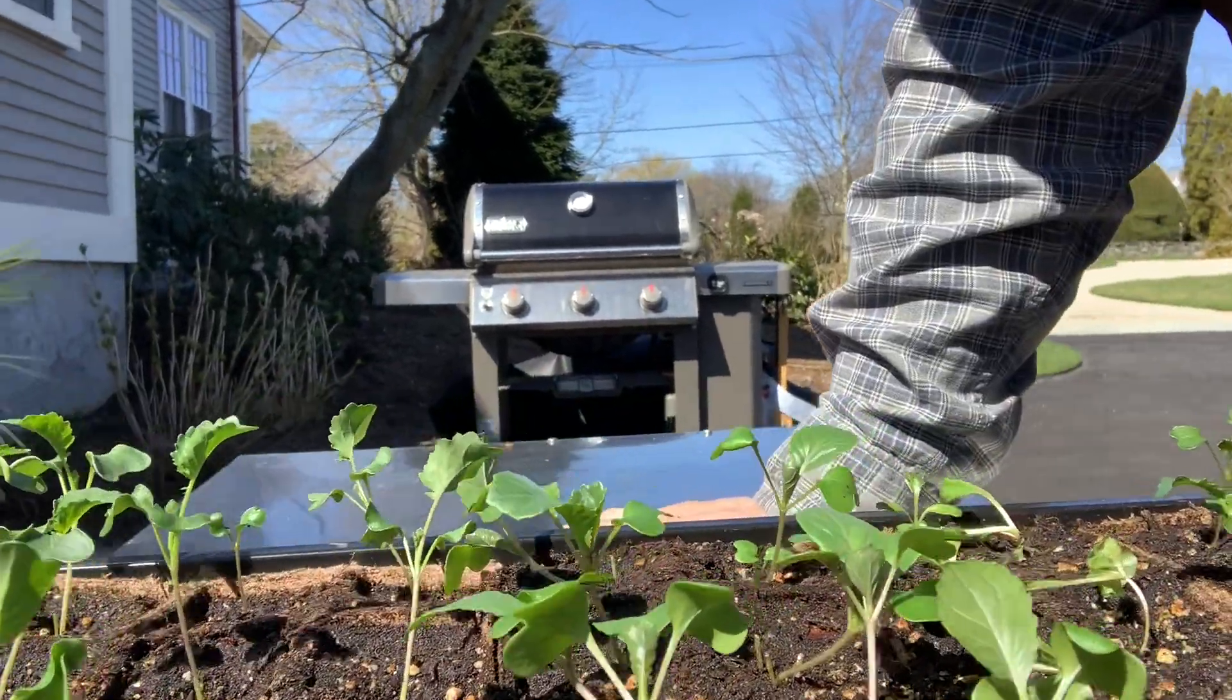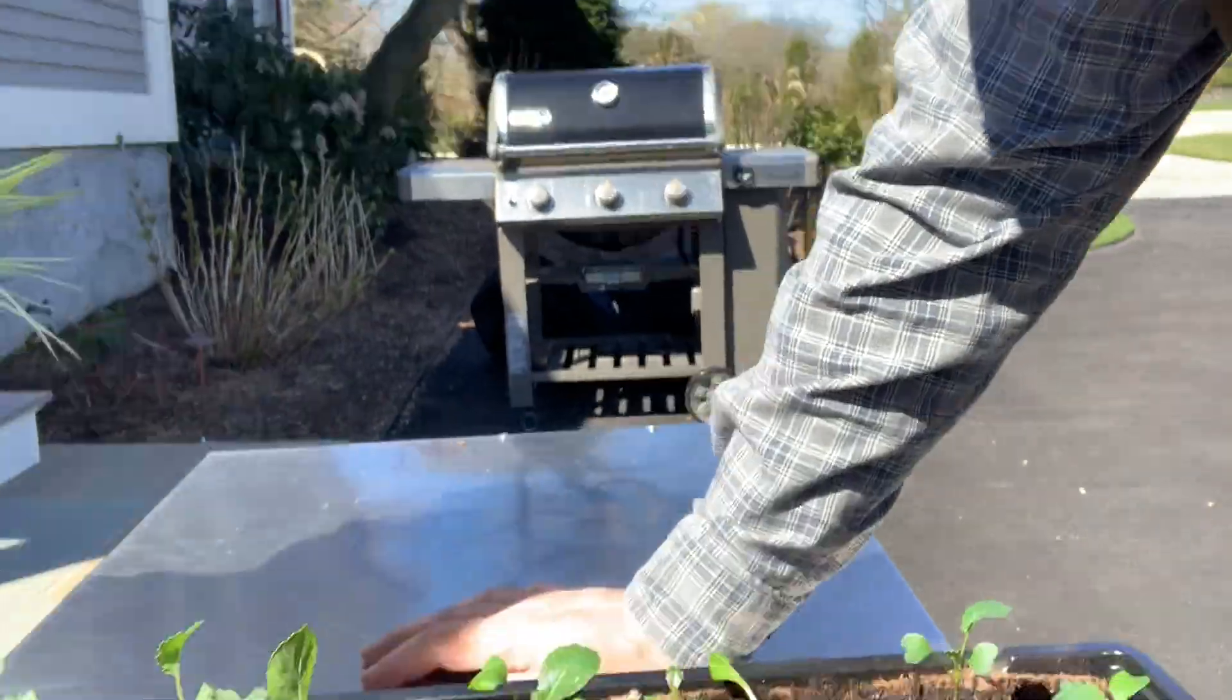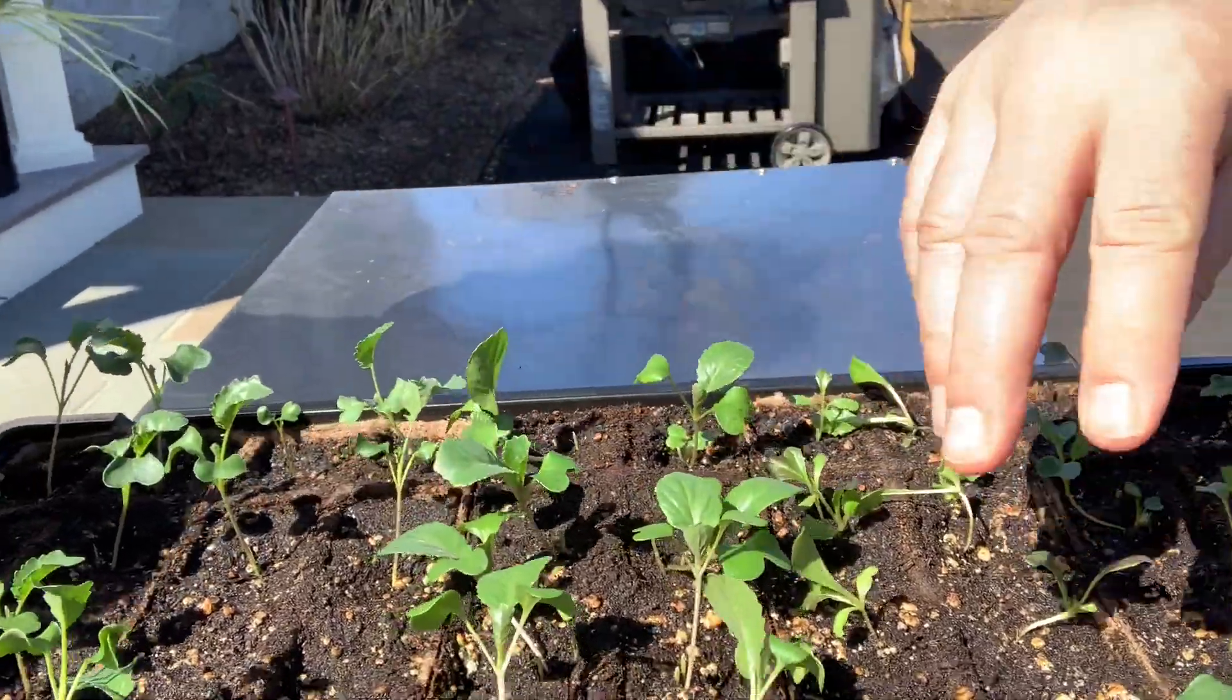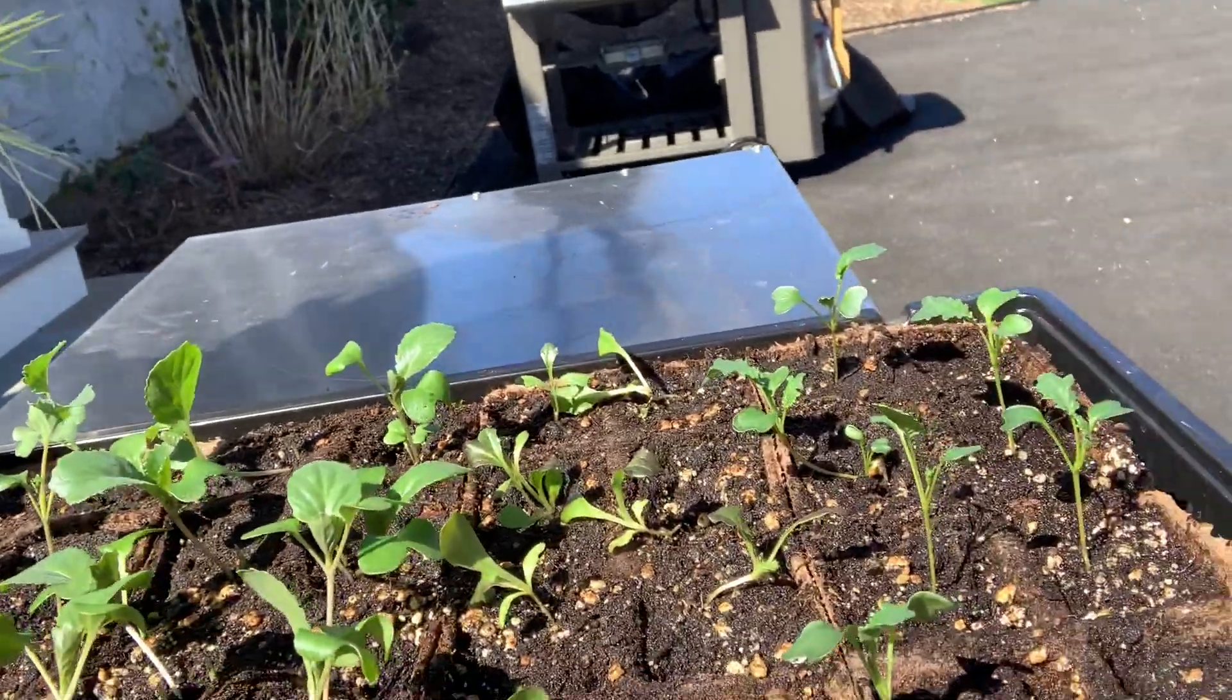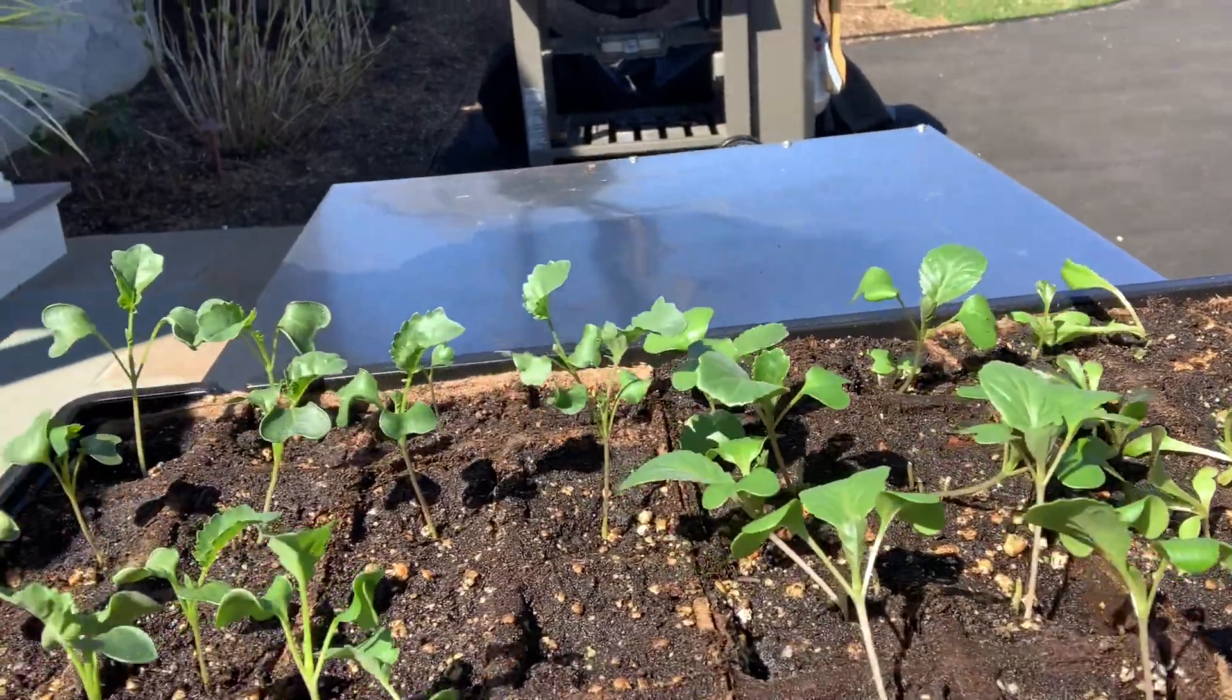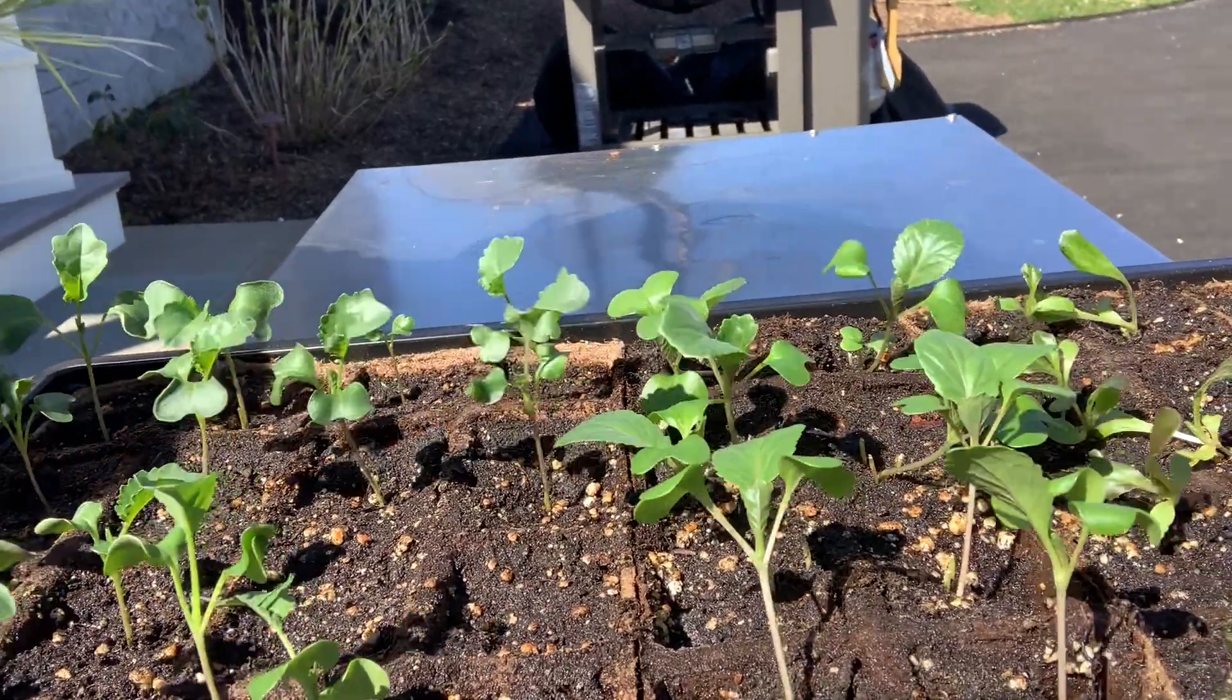Then we also have some lettuce in this tray. Some cabbage. Some cabbage. Lettuce. Do you guys eat any of those things? Kale. They don't look like food yet, but we'll keep checking on them. Kale.